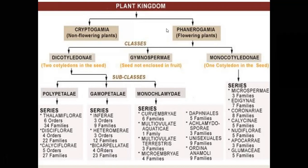The monochlamidae subclass has flowers with perianth arranged in a single whorl, which is commonly sepaloid. Petals are completely absent. The monochlamidae is directly classified into series — orders are absent. The eight series are: Curvembryae, Multiovulatae Aquaticae, Multiovulatae Terrestres, Microembryae, Daphnales, Achlamydosporae, Unisexuales, and Ordines Anomali.